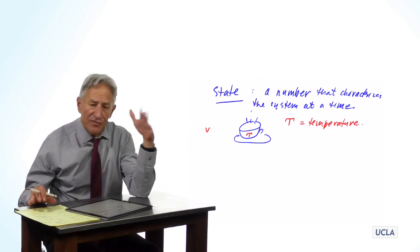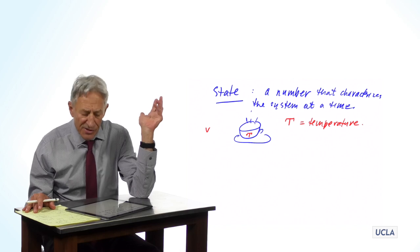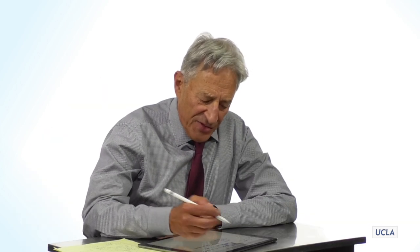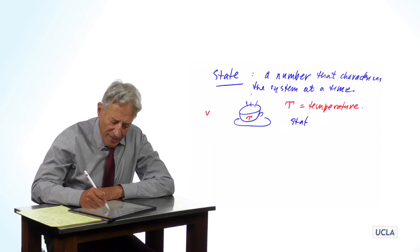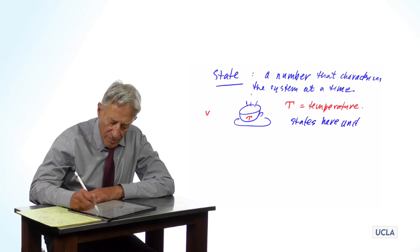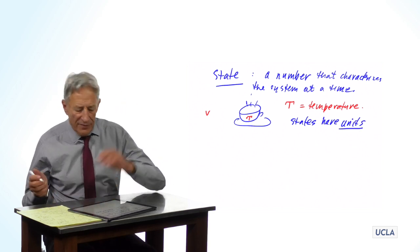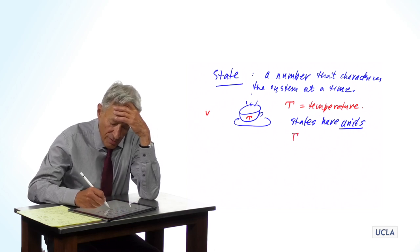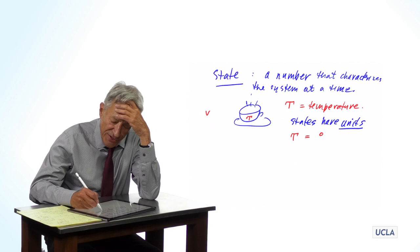That temperature is going to change over time and give us the development of the system. The first point we have to make about states is that states have units. In this case, temperature — we're going to measure this in degrees Kelvin, which is absolute zero degrees. If we were measuring the amount of coffee left, the volume of the cup of coffee, it could be its mass in grams or its volume in cubic inches. Obviously different variables require different units, but states always have units.